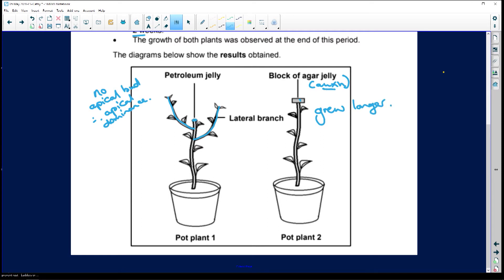Because the auxins in the block of agar jelly tricked the plant into thinking it still had an apical bud. So instead of having an apical bud, it now has a block of agar jelly with all the hormones that it needed. And it grew upwards. And you'll see here, there are no lateral branches. Why? Because of apical dominance. Only when that tip is off, will it start to grow sideways.